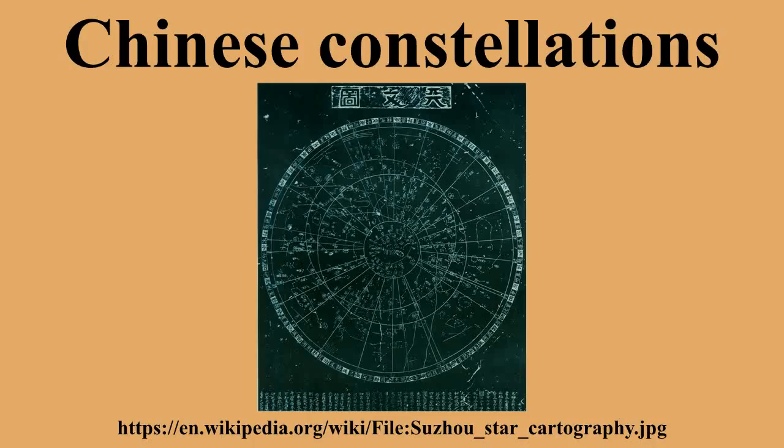Traditional Chinese astronomy has a system of dividing the celestial sphere into asterisms or constellations, known as officials. The Chinese asterisms are generally smaller than the constellations of Hellenistic tradition. The Song dynasty Suzeho planisphere shows a total of 283 asterisms, comprising a total of 1,565 individual stars.